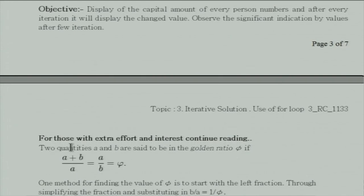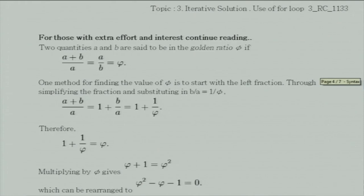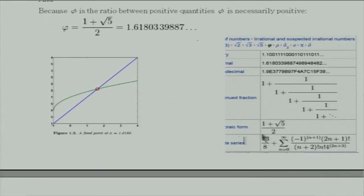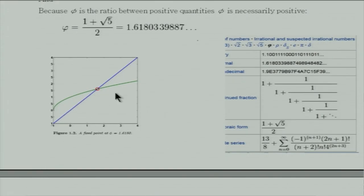In our objective, we have a section 'for those with extra interest, continue reading' — to provide a challenging part for advanced students who would otherwise be bored, while others can skip it. There is a complete explanation of how the value of phi is found using this loop iteration or induction method. Interestingly, when starting with any capital amount — large or small — after 3-4 business deals all values converge to the same capital, illustrating convergence graphically.